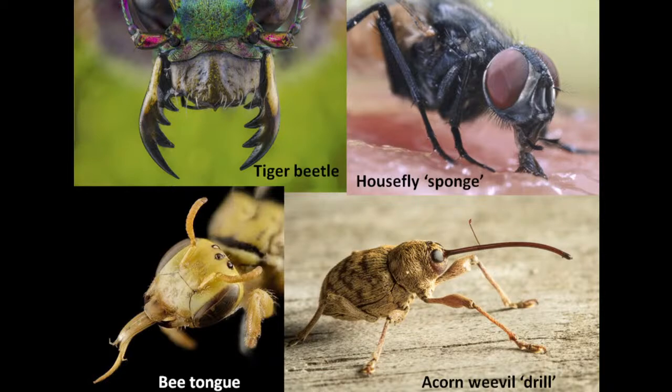Insects do so many different kinds of things because they eat so many different kinds of things, so they have all kinds of mouths. Tiger beetles run around, catch other insects, and snip them in half. Bees drink nectar from flowers and need a relatively long tongue. House flies have a mouth that's really a sponge — when they detect sugar or something good to consume, they throw out that sponge of a tongue and lap it up. The problem is that sponge picks up whatever the fly found on the surface, including disease-causing bacteria and viruses.